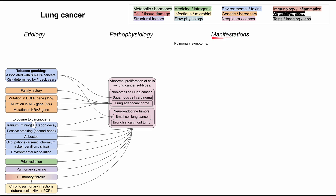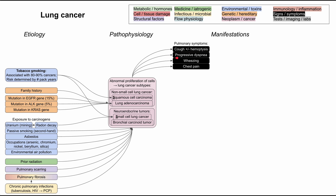Now we'll talk about the manifestations, starting with pulmonary symptoms. You can have a cough, with or without hemoptysis — hemoptysis being a bloody cough. Progressive dyspnea or shortness of breath, wheezing, and chest pain can all result from lung cancer.